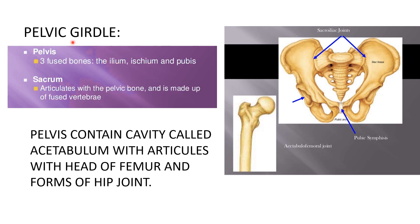The pelvic girdle is formed of the pelvis bone, also known as the coxal bone, which is formed by the fusion of three bones: ilium, ischium, and pubis. It articulates with the sacrum to form the sacroiliac joint. The cavity formed is known as the pelvic cavity. On the pelvic bone there is a cavity known as the acetabulum, in which the head of the femur fits, forming the hip joint.